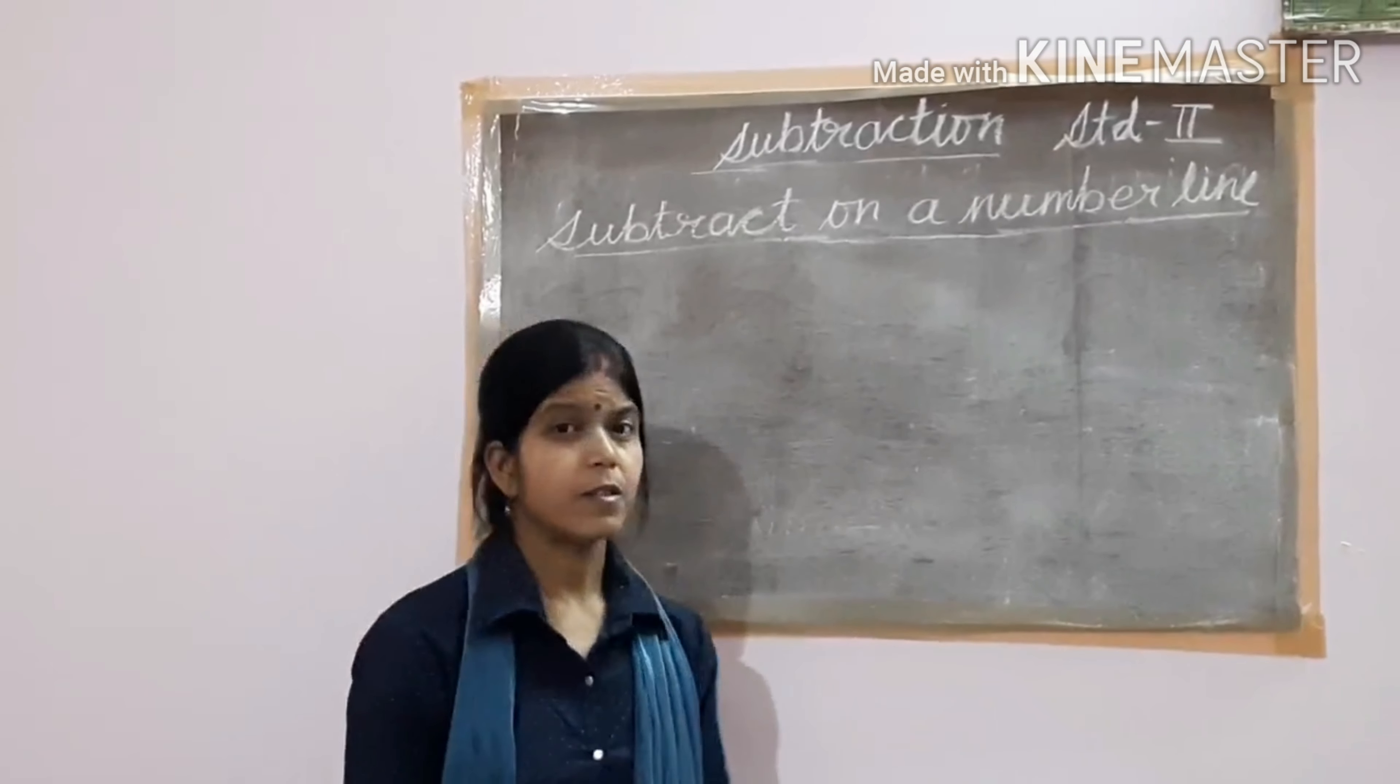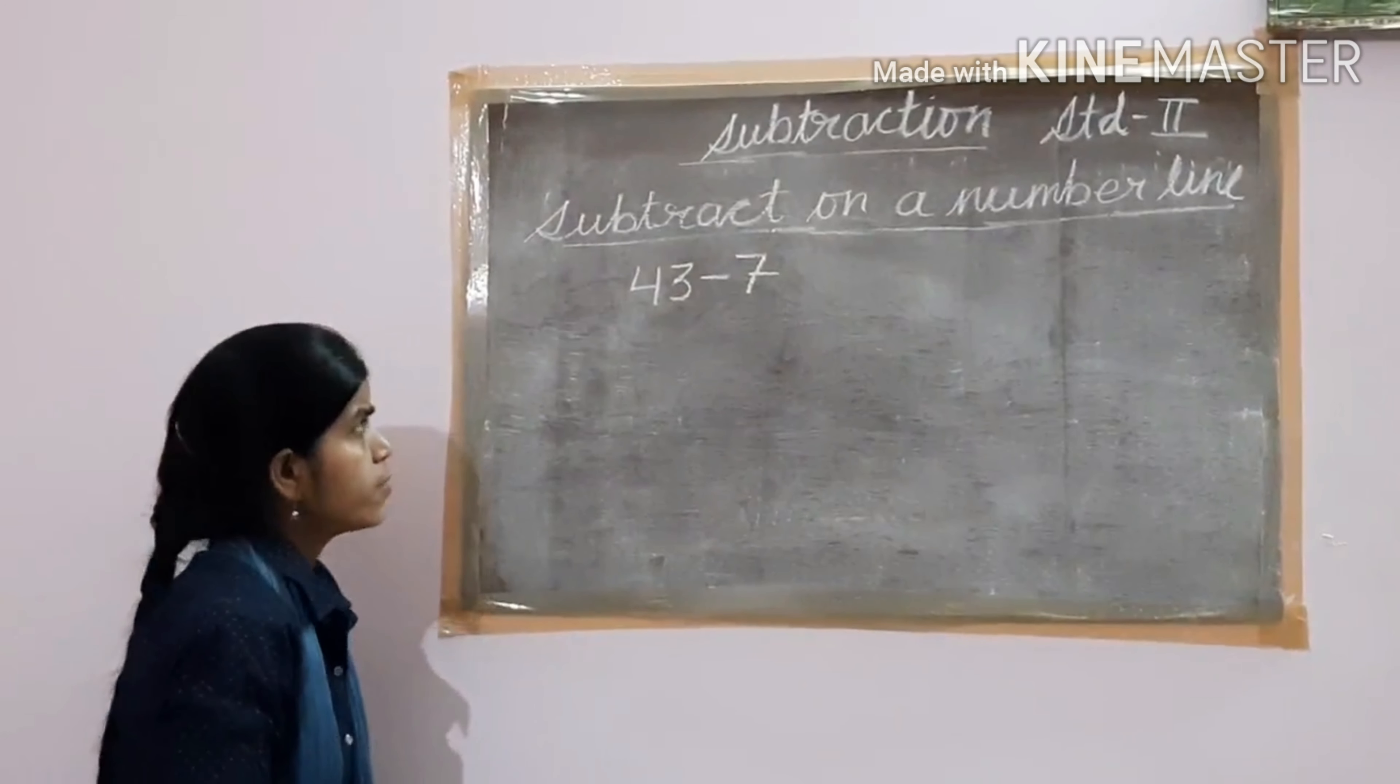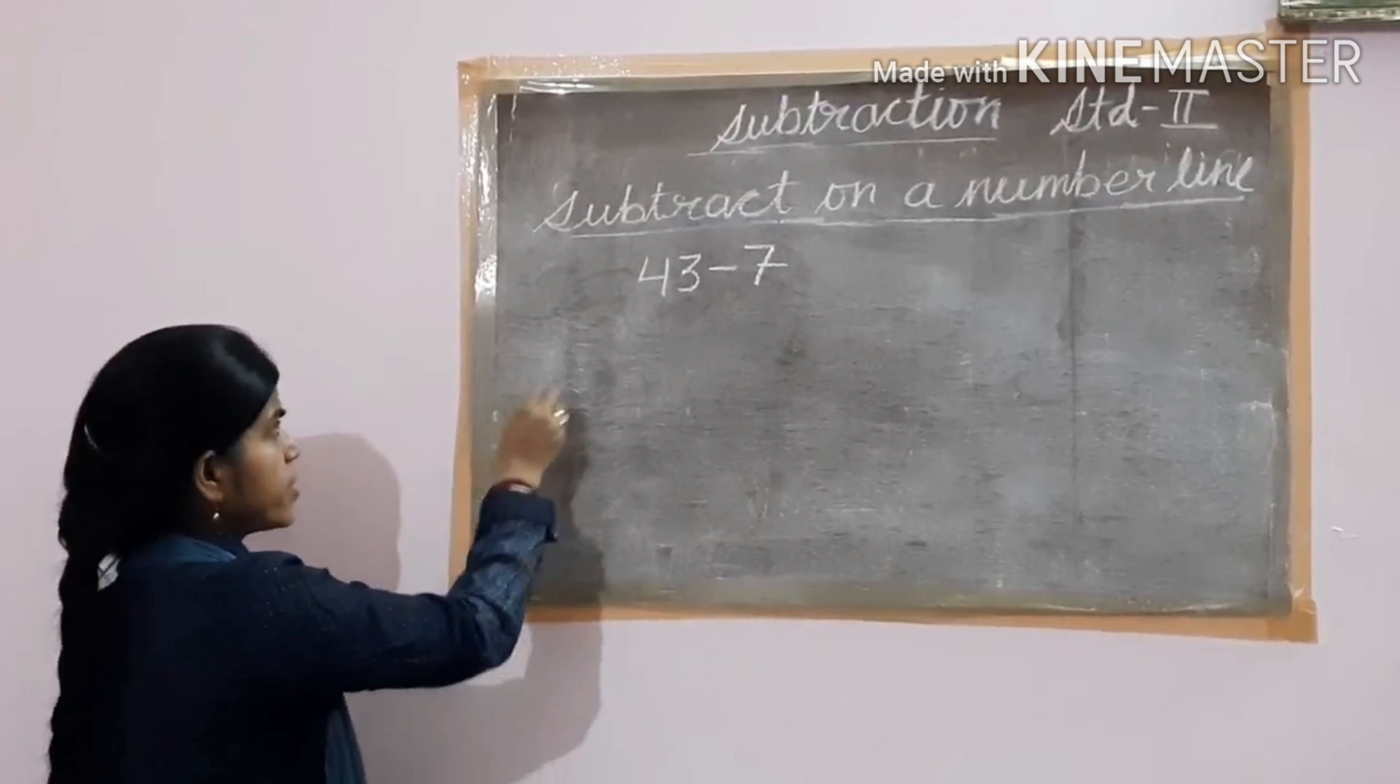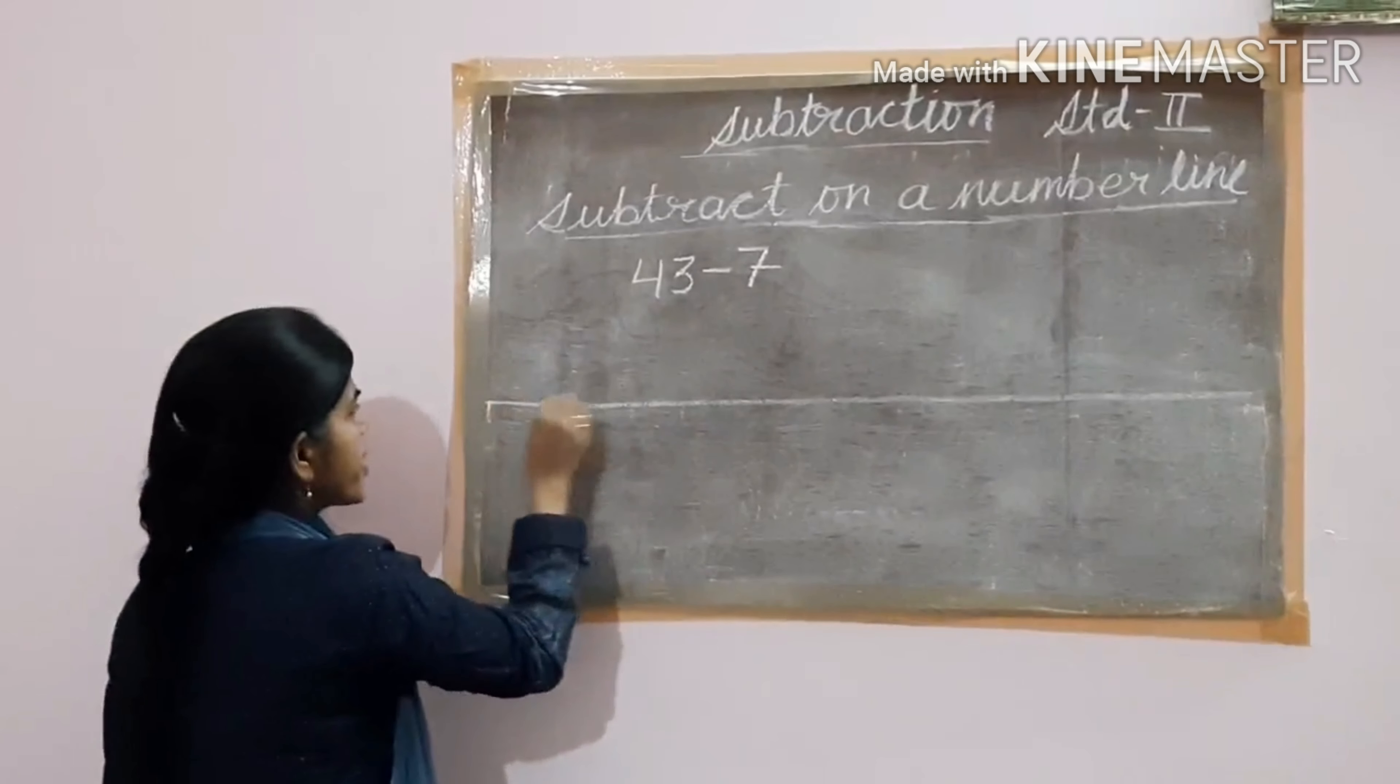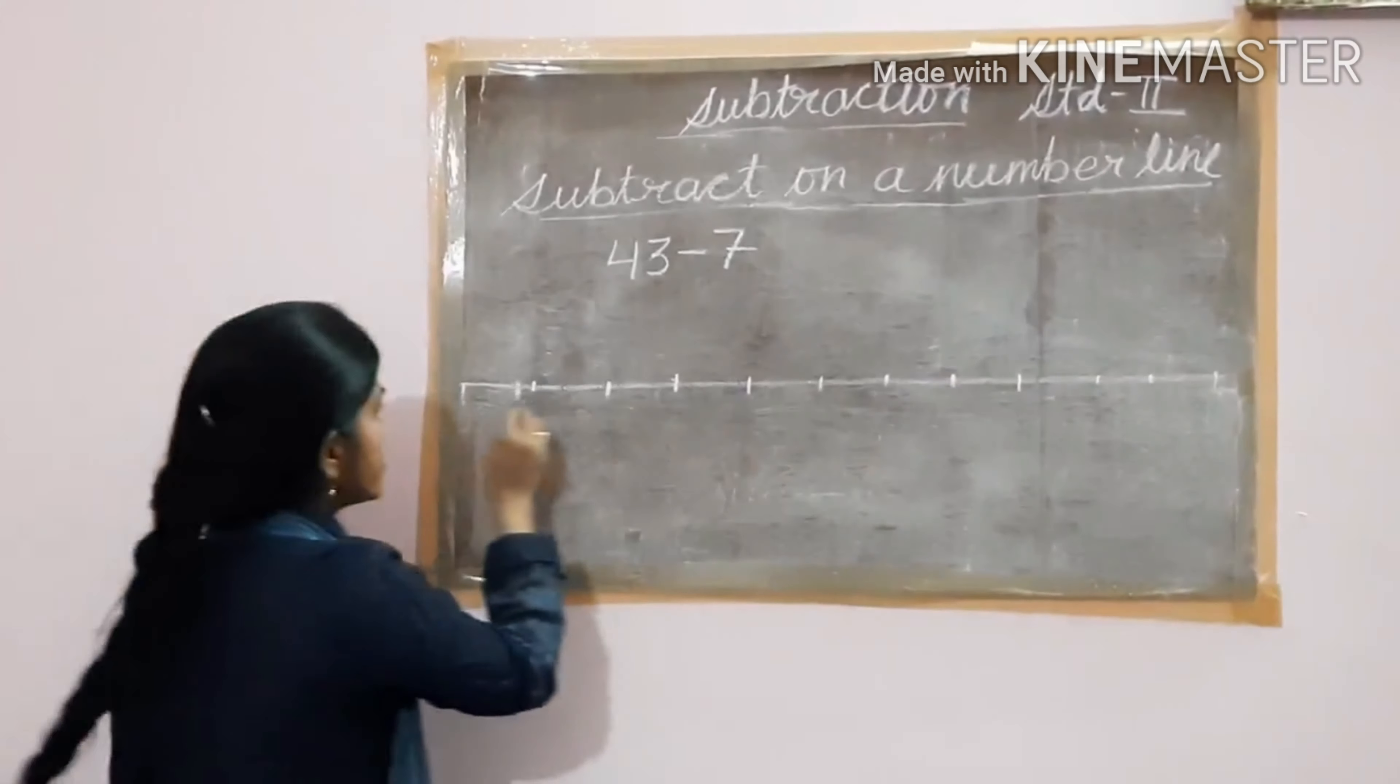Now I will show you by giving another example. If the question is 43 minus 7, you have to write from 0 to 43, but your copy pages are not so big. What do you do? You can write from the 30 onwards. Draw a number line and then you mark it at equal intervals.